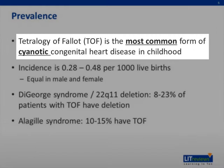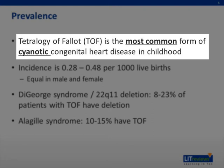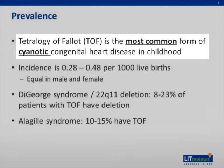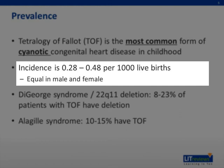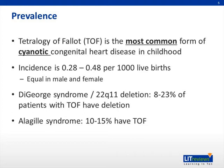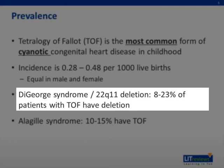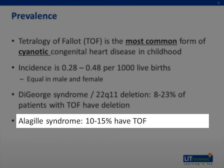Tetralogy of Fallot is the most common form of cyanotic congenital heart disease in childhood. Cyanosis is defined as systemic desaturations. The incidence is reported from 0.3 to 0.5 per 1,000 live births, and it is equal in males and females. Around 8% to 23% of patients with Tetralogy of Fallot have 22q11 deletion, also known as DiGeorge syndrome. About 15% of patients with Alagille syndrome have Tetralogy of Fallot.